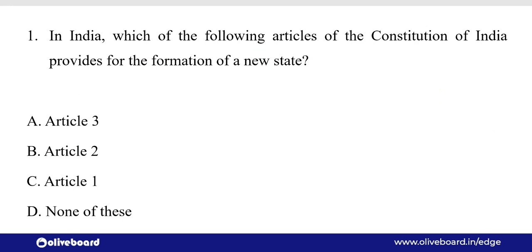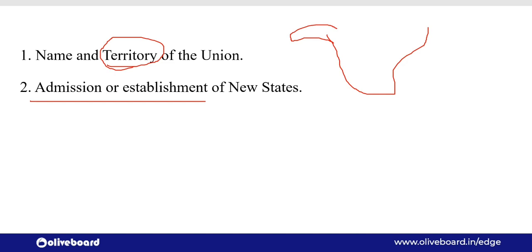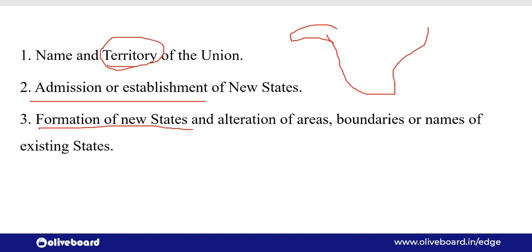In India, which of the following articles of the Constitution of India provides for the formation of new states? अगर India में किसी नई state का formation करना है, किसी नई राज्य का गठन करना है, तो उसके लिए Article 3 का इस्तमाल किया जाता है। Article 1 deals with the name and territory of the union. Article 2 deals with admission and establishment of new states. Article 3 deals with formation of new states and alteration of areas — जैसे कि Andhra Pradesh से अलग होकर Telangana बना था, उसमें Article 3 का प्रयोग किया गया।